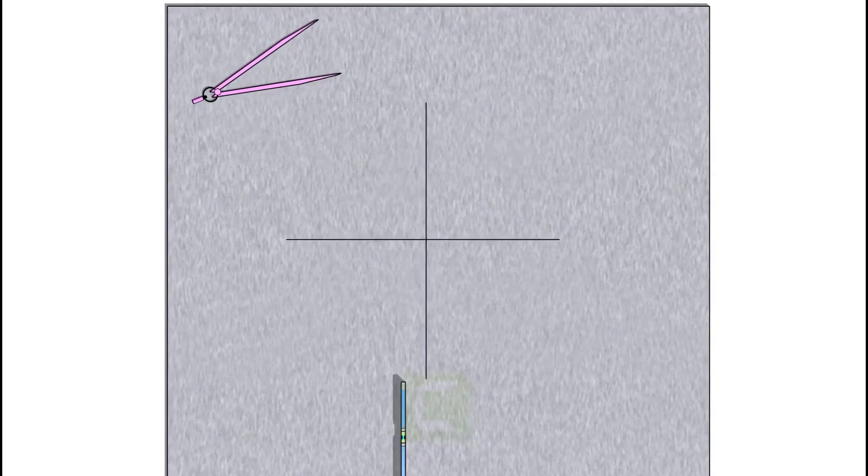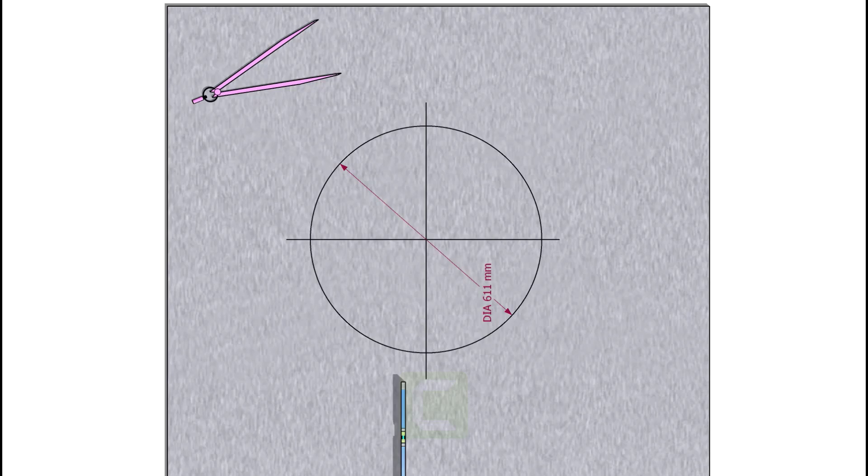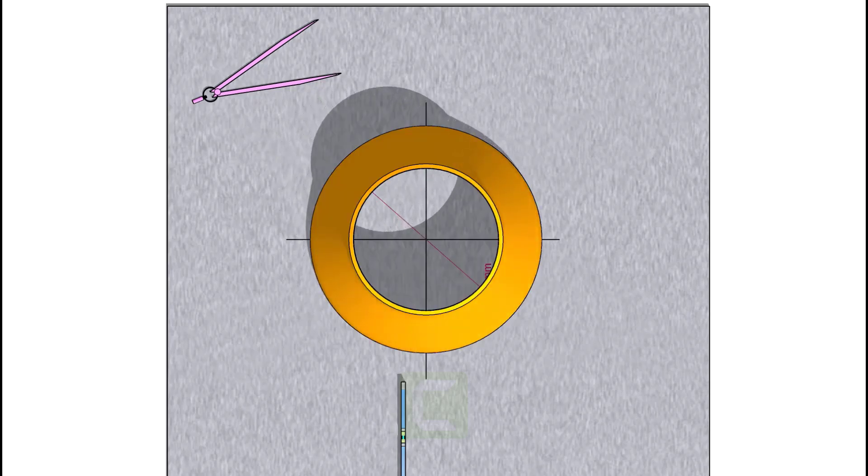Draw two lines intersecting each other. Draw a circle of diameter 1 mm more than the outside diameter of the large side of the reducer. For example, the actual diameter of this reducer is 610 mm, but I added 1 mm and marked a 611 mm diameter circle.